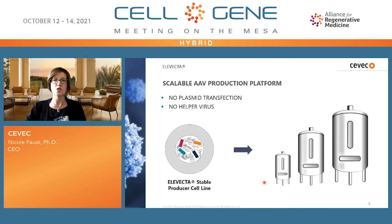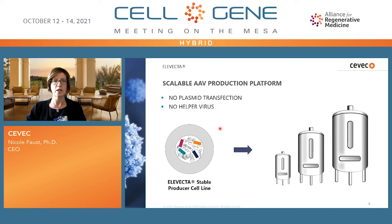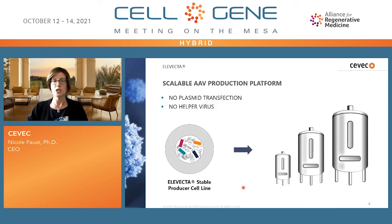We are addressing this with our AAV platform, which relies on true stable producer cell lines. That means no further plasmid transfection is required for production, and we do not need a helper virus to drive production. It's a fully stable cell line with all components integrated — similar to how you know it from monoclonal antibodies. These cells are banked as a GMP cell bank, expanded to production volume, and production is carried out in large-scale bioreactors.